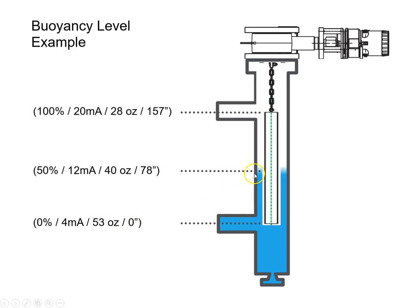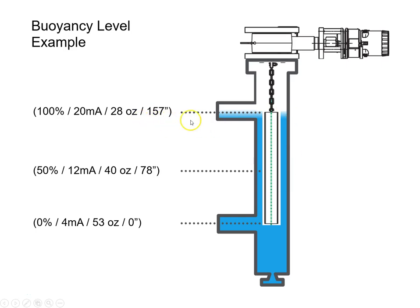At 50% level, or 12 milliamps, we'll measure 40 ounces or 78 inches. We can see the liquid level is actually rising, so it's providing more buoyant force to make the displacer appear lighter. And finally, when we get to the upper range value — 100%, 20 milliamps — we see 28 ounces or 157 inches. The liquid is providing more buoyant force to the displacer, so it's at its lightest here.